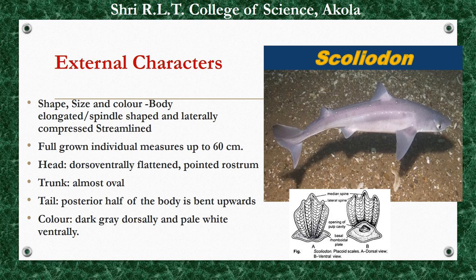Now we come to the main part of this lecture — the External Characters of Scoliodon. First is the shape, size, and color. Here you can observe the photograph of Scoliodon. The body is elongated, fusiform or spindle-shaped, and laterally compressed. The body of Scoliodon is highly streamlined. Due to this streamlined body form, it is very easy to swim in water. This shape reduces the resistance of water and makes movement easier and faster with minimum wastage of energy. A full-grown individual measures about 60 centimetres in length.